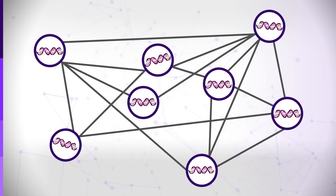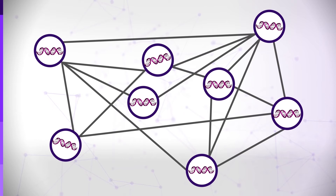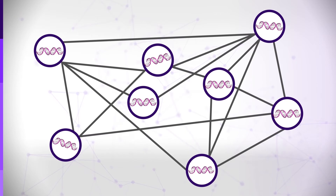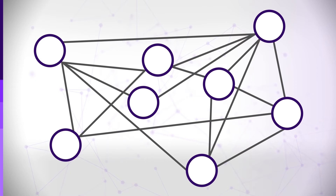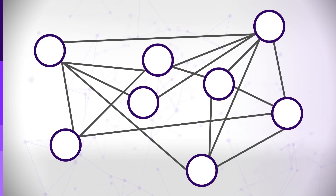Each such network may represent a specific type of biological interaction. For example, one type of network may represent the network of expression control in an organism — each node will be a gene and each edge will mean that one of the connected genes controls the expression of the other. It may be a transcription factor or an inhibitor. The resulting network, with thousands of genes and tens of thousands of interactions, can be an extremely useful tool for understanding biology.